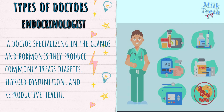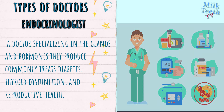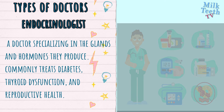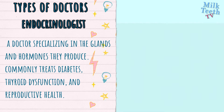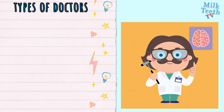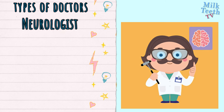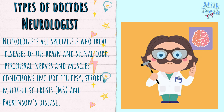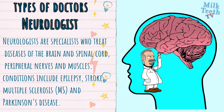Endocrinologist: a doctor specializing in the glands and the hormones that they produce. Commonly treats diabetes, thyroid dysfunction, and reproductive health. Neurologist: specialists who treat diseases of the brain and spinal cord, peripheral nerves, and muscles.